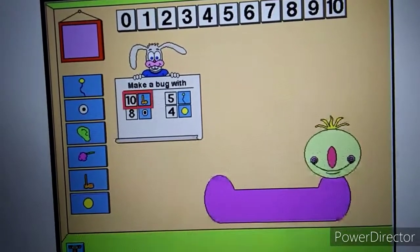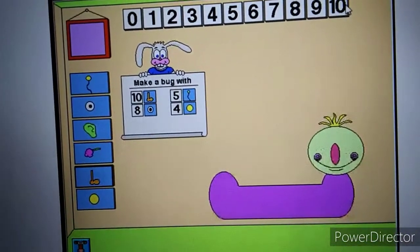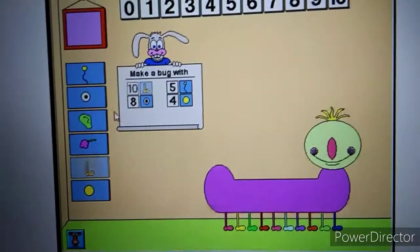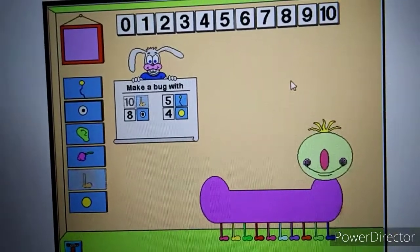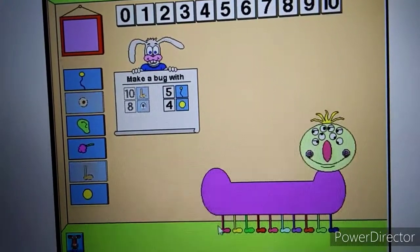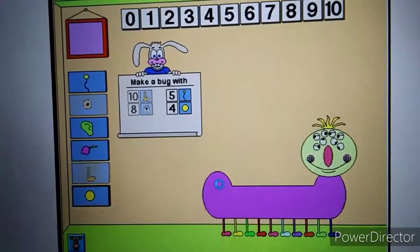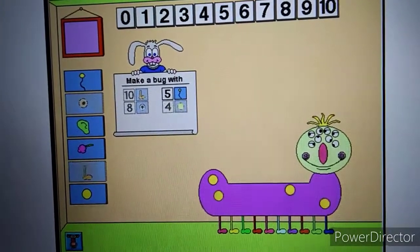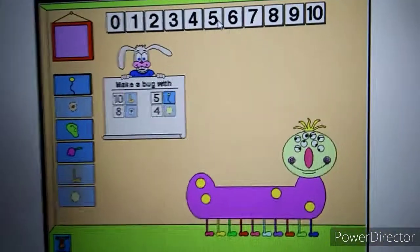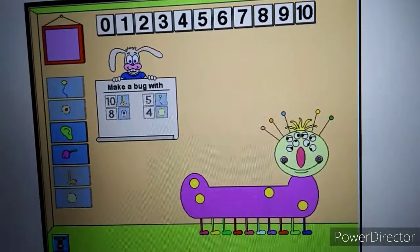Make a bug with ten feet, eight eyes, four spots, and five antennae. Feet. Ten feet. Eyes. Eight eyes. Spots. Four spots. Antennae. Five antennae. Awesome.